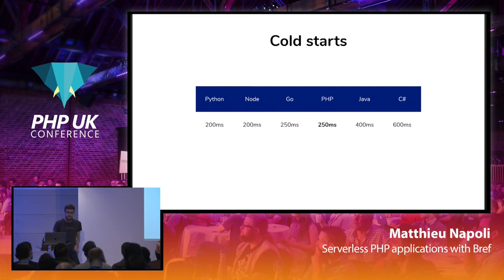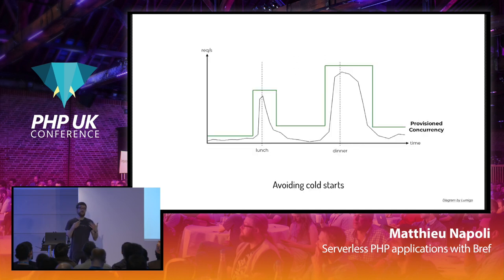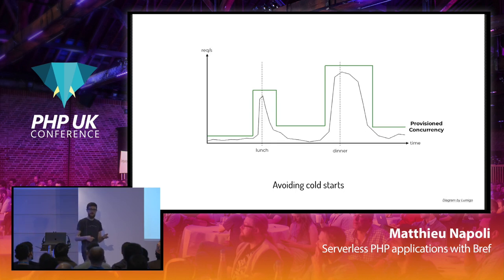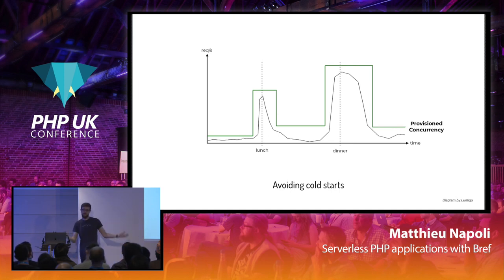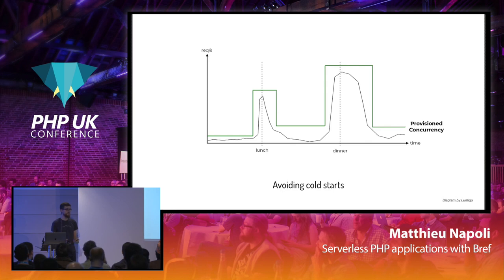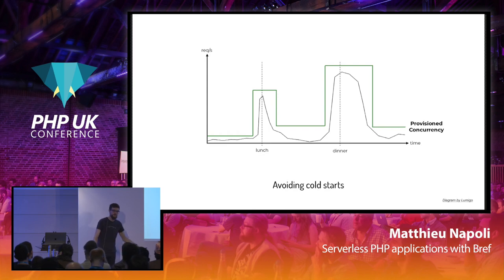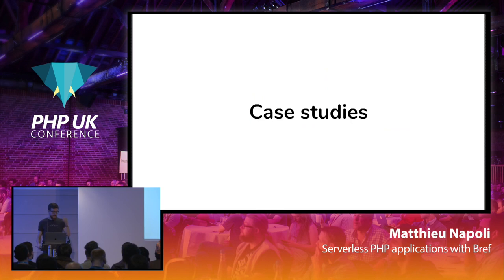If you really want to use Lambda and are worried about cold starts, you can provision instances — say you always want 10 containers alive and warm. You pay for that, but it's possible. You can even provision based on peak times — you know there's a spike at lunch and dinner, so you can anticipate and avoid cold starts entirely. I'd recommend that for larger projects. But for most web agencies, startups, and small-to-medium projects, it's perfectly fine as-is.